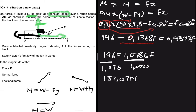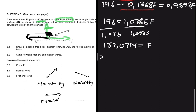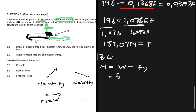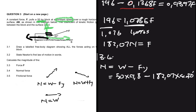So the applied force is 182.07 newtons. Moving to 3.4, we're looking for the normal force. We already deduced that the normal force equals the weight minus the y-component of the applied force: 50 × 9.8 − 182.07 × sin 20°. This gives a normal force of 427.73 newtons.